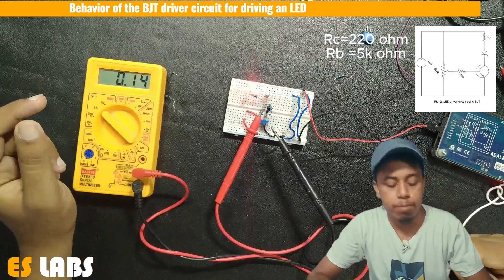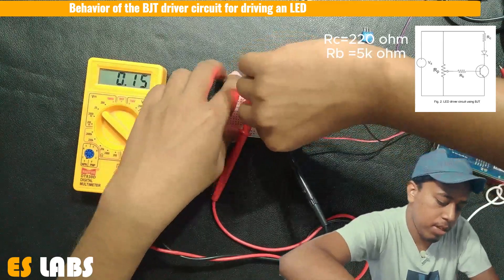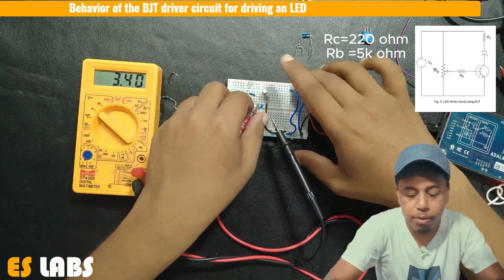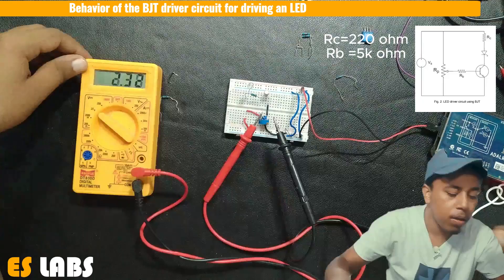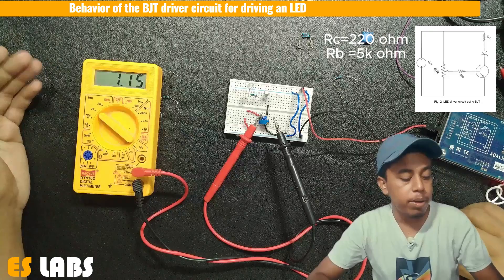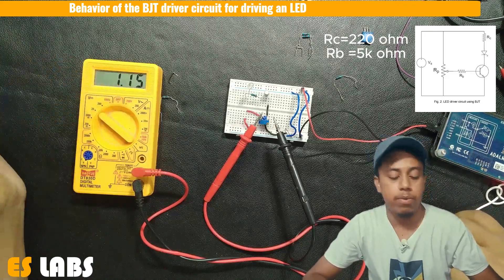So this BJT is now on. And in the last part, we have to remove this RB. And the voltage at the variable terminal is equal to 1.15 volt.